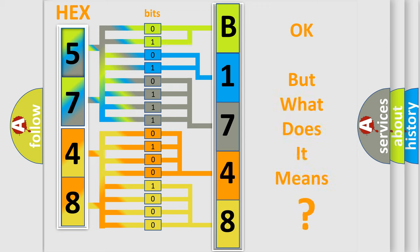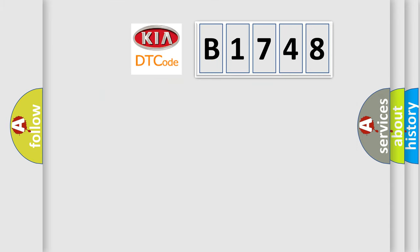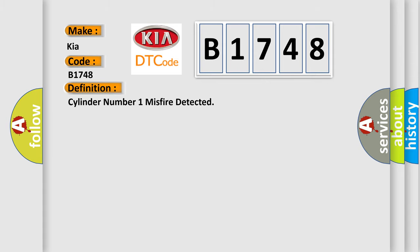The number itself does not make sense to us if we cannot assign information about what it actually expresses. So, what does the diagnostic trouble code B1748 interpret specifically for Kia car manufacturers? The basic definition is: Cylinder number one misfire detected.